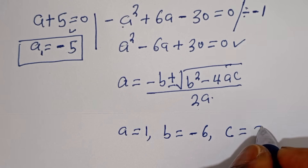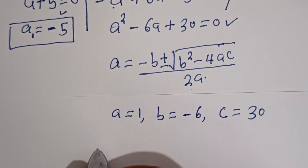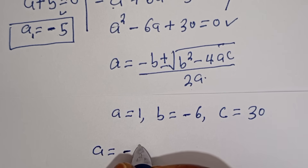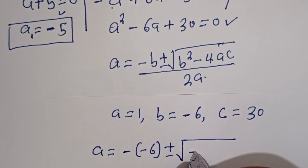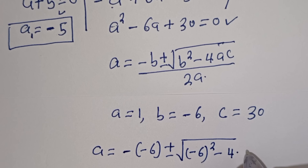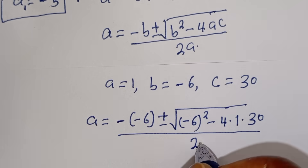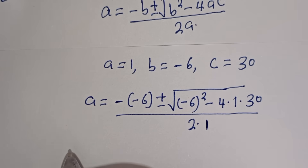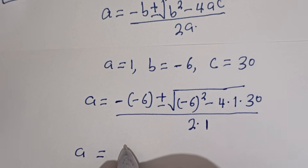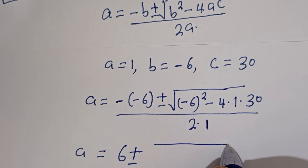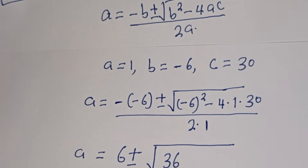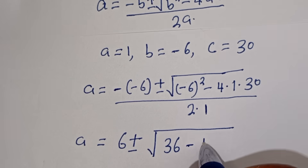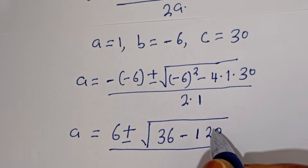Substituting into the formula: A equals minus of minus 6, plus or minus square root of minus 6 all squared minus 4 times 1 times 30, divided by 2 times 1. This gives A equals 6 plus or minus square root of 36 minus 120, divided by 2, which is 6 plus or minus square root of minus 84, divided by 2.